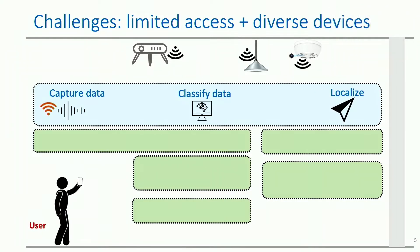Building such a system requires three key components. First, we need a module to capture the data — in this case, the wireless signals coming from IoT devices. Second, we need a data classification module that can take this captured data as input and predict the device type. And last but not least, we need a localization module that can localize and say there is a camera at XYZ location.